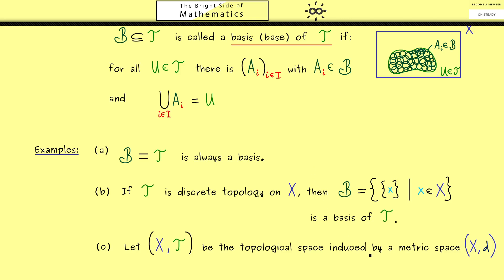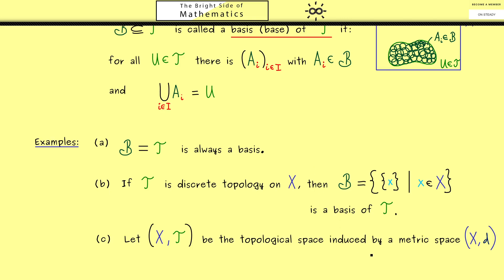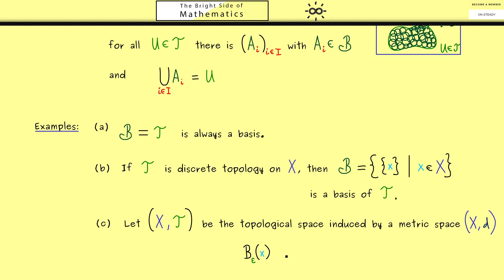So you know in this example, openness here means exactly the same as openness in the metric space. As a reminder, openness there is defined by using epsilon balls. And such a ball is denoted by B_epsilon(x), where epsilon is the radius and x is the middle point.